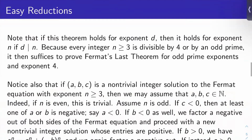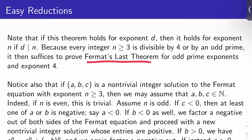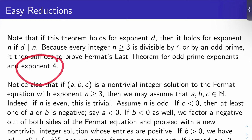Let's make some easy reductions. If the theorem holds for exponent d, then it holds for any exponent n with d dividing n. But every integer n at least 3 is divisible by 4 or an odd prime. So if you put these two statements together, you see that it suffices to prove Fermat's Last Theorem for odd prime exponents and for exponent 4. We're going to prove exponent 4 in this video.